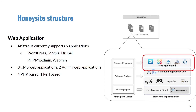At the top level, the honey site is running one of five web applications. Currently, we selected WordPress, Joomla, Drupal, PHP Madman, and Webman. In order to capture as much information from bots as possible, we created three levels of fingerprinting techniques.